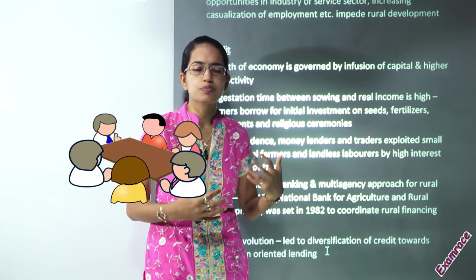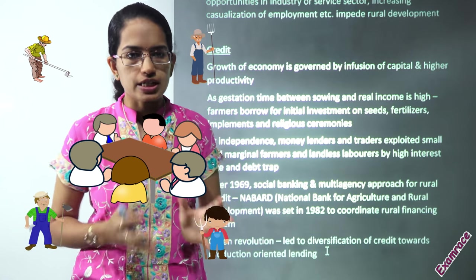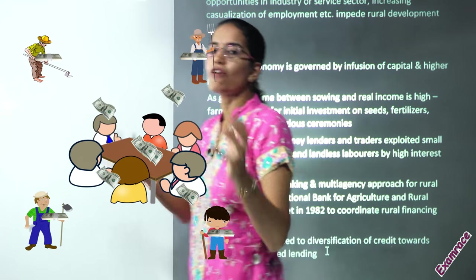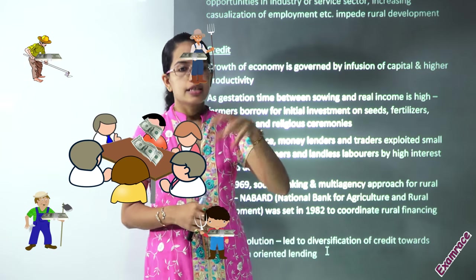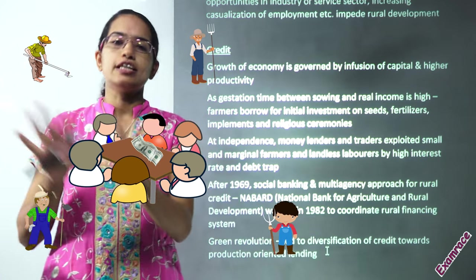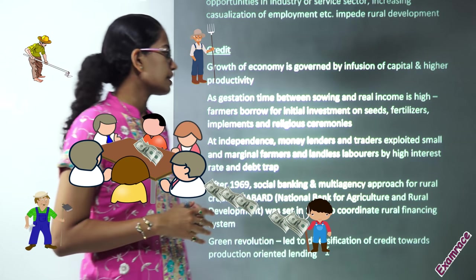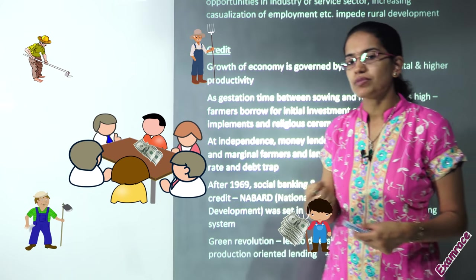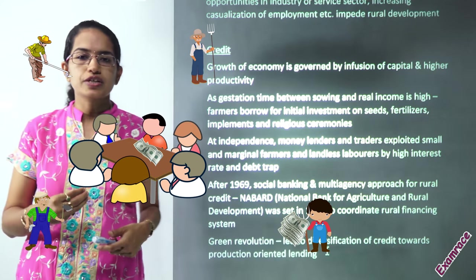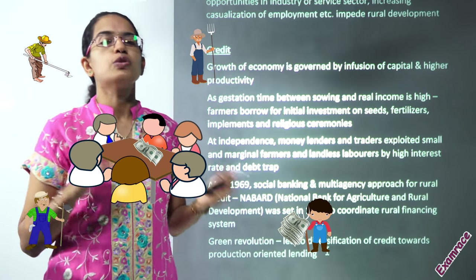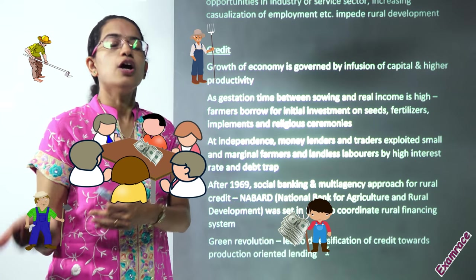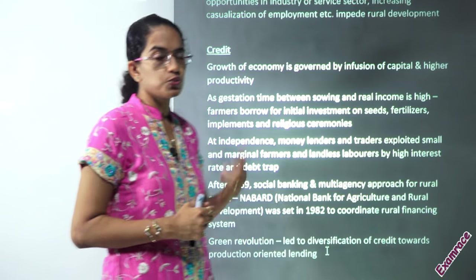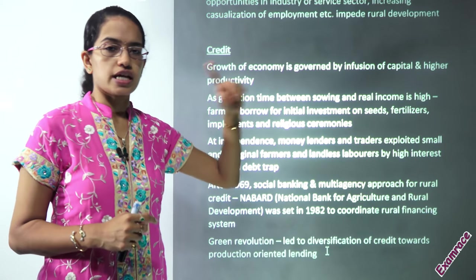Therefore, you have self-help groups that came into being. Small microcredit agencies were established and they work around by having a collective pool of money, and a person who wants can get a collateral on the name of that self-help group. That's how microcredit financing units function and help farmers basically borrow for initial investment. A farmer would definitely have to borrow something for initial investment — it's only after that he can have seeds in the farm, grow a crop, and then be in a position to repay the loans. Lending was an important issue at the time of independence and was creating a vicious cycle of poverty.